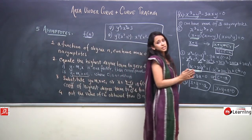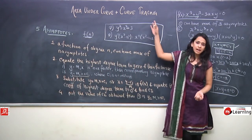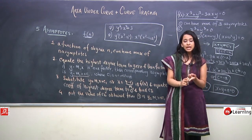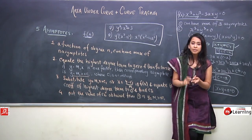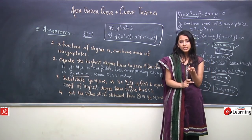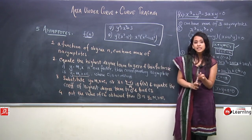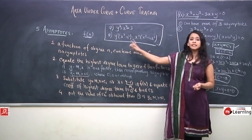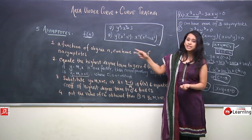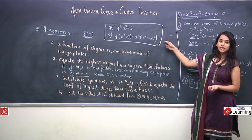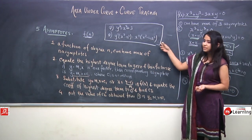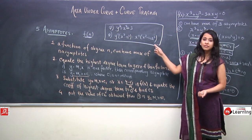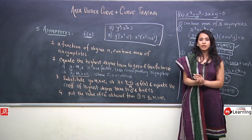In today's lecture we discussed: why we study area under curve; steps for curve tracing; symmetry; how to determine if a curve passes through origin; tangents at origin; intersection with coordinate axes; range of a curve; and how to find asymptotes. In the next lecture we will discuss the two practice problems and then study how to find tangents to a curve.